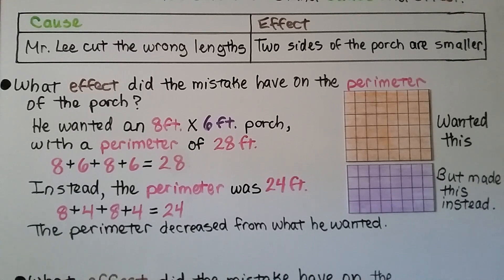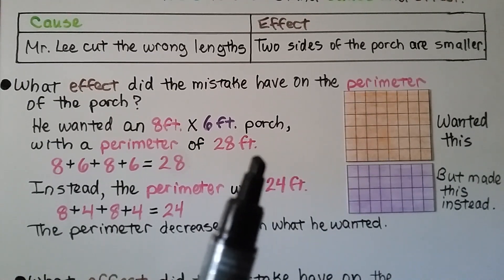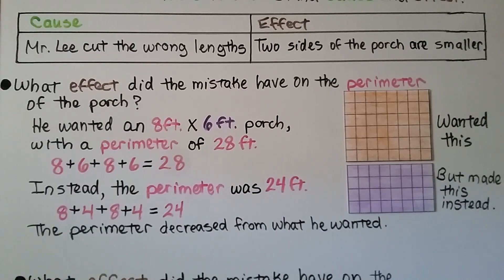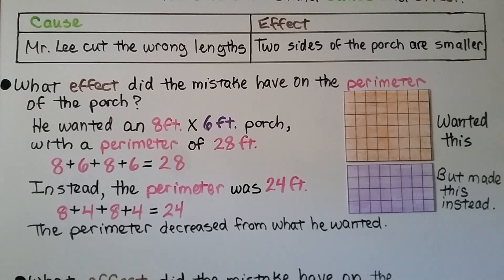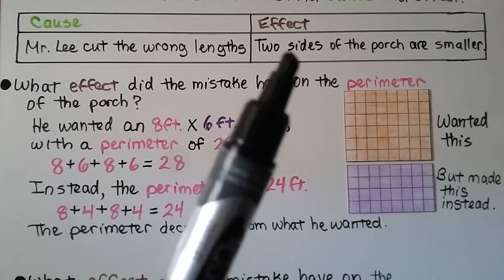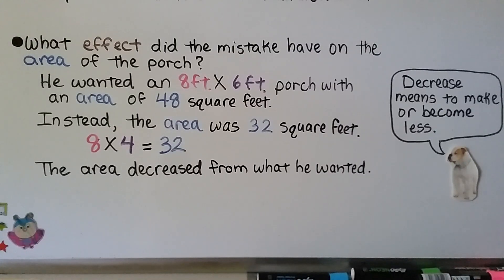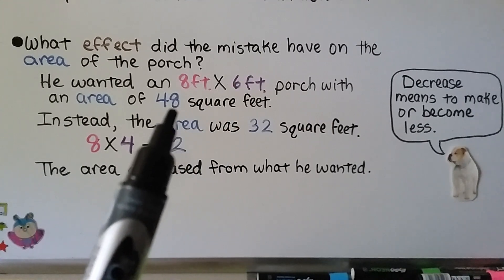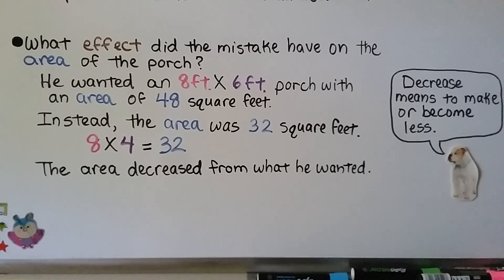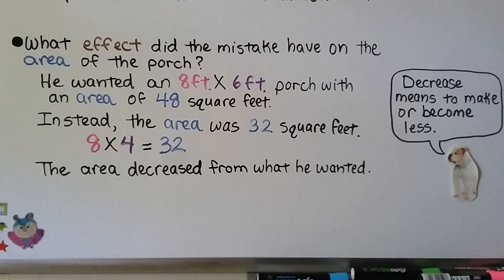What effect did the mistake have on the porch? He wanted a perimeter of 8 plus 6 plus 8 plus 6 equals 28 feet, but instead the perimeter was 8 plus 4 plus 8 plus 4 equals 24 feet — the perimeter decreased. The area also decreased: he wanted 8 times 6 equals 48 square feet, but instead got 8 times 4 equals 32 square feet. So both the perimeter and area decreased from what he planned.